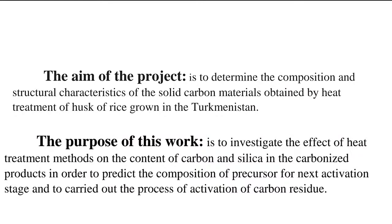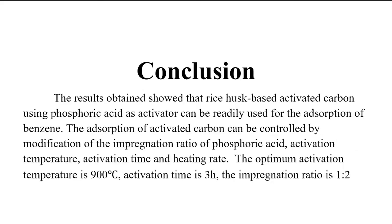The aim of the project is to determine the composition and structural characteristics of solid carbon materials obtained by heat treatment of rice husk grown in Turkmenistan. The purpose of this work is to investigate the effect of heat treatment methods on the content of carbon and silica in the carbonized products, in order to predict the composition of the precursor for the next activation stage and to carry out the process of activation of carbon residue. The results show that rice husk-based activated carbon using phosphoric acid as activator can be readily used for the adsorption of benzene. The adsorption of activated carbon can be controlled by modification of the impregnation ratio of phosphoric acid, activation temperature, activation time, and heating rate. The optimum activation temperature is 900°C and activation time is 3 hours. The impregnation ratio is 1:2.